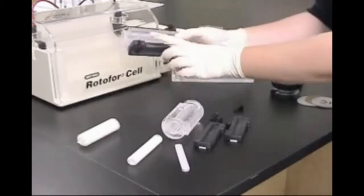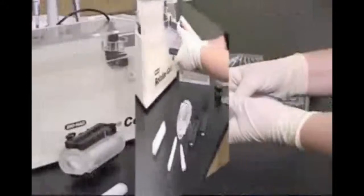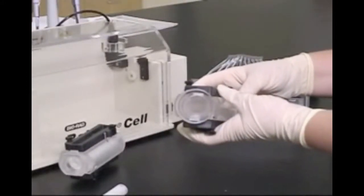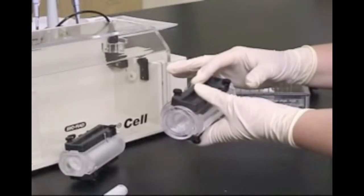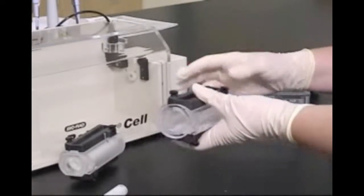Both focusing chambers have two sets of 20 holes, or ports, that are used for sample loading and for harvesting. The ports are covered by black plastic port covers, which are held in place with black Teflon screws.